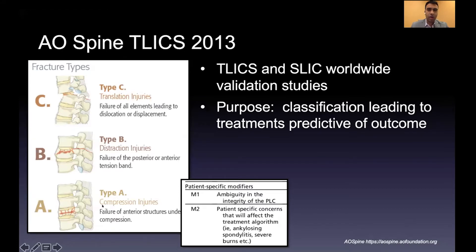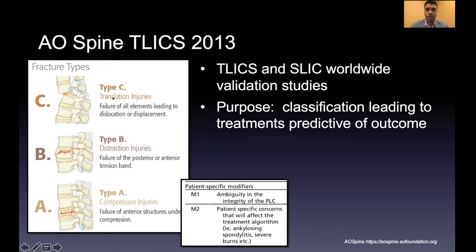Broadly speaking, there are three different types on the AO Spine criteria. Type A are compression injuries involving only the anterior column — they do not significantly involve the middle column and do not involve the posterior column. Type B are distraction injuries that by definition involve the posterior column or disruption of the posterior tension band.